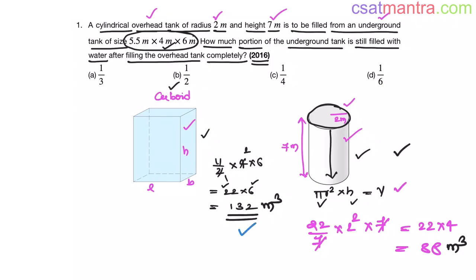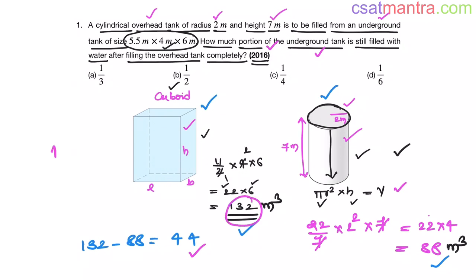Out of 132 cubic meters of water, 88 cubic meters is taken out to fill the cylindrical tank completely. The remaining water in the underground tank is 132 minus 88, which equals 44. We are asked what portion of the underground tank this is — 44 out of 132 equals 1 by 3. So our answer is A.